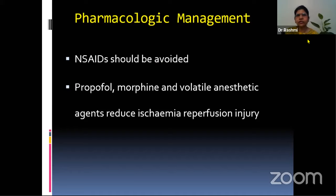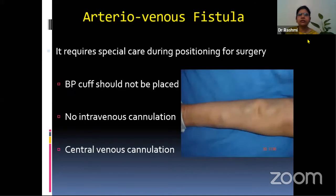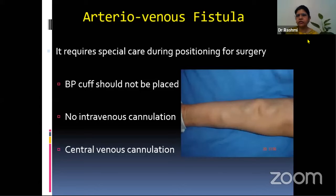The muscle relaxants of choice are cis-atracurium and atracurium. Both of these drugs and the reversal agents get excreted from the graft kidney at the same rate as native kidneys, so there is no problem. The AV fistula requires special care during positioning for surgery and is always made in the non-dominant arm. BP cuff should not be placed on this arm, no intravenous cannulation, and no central venous cannulation should be done on this arm, because there is arterialization of the veins and the pressures are not accurate.